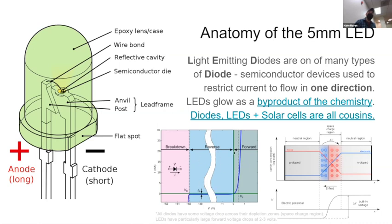LEDs are very efficient. They only let you pass current in the forward direction. This graph is a bit ridiculous, but basically what it's showing with the blue line is that an LED only lets current pass in the forward direction, not in the reverse direction — unless you break it, and then it'll let it pass if you really overdo it.